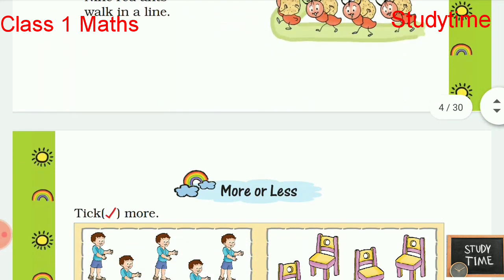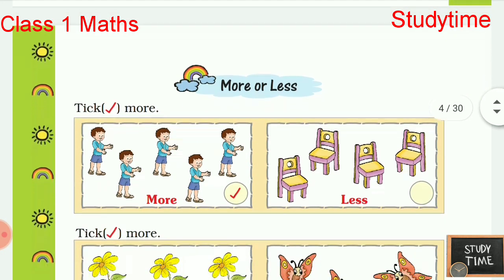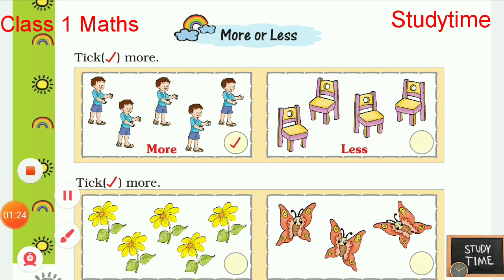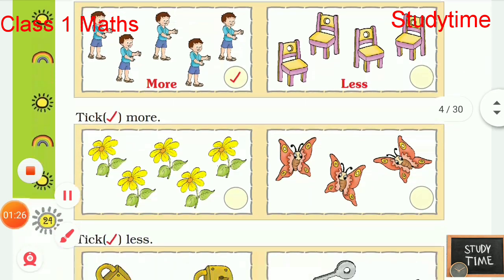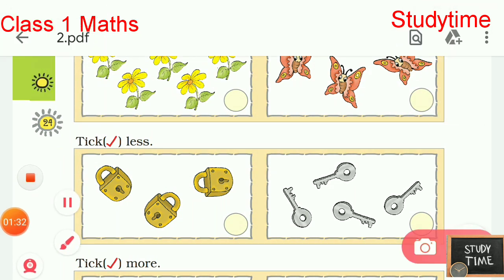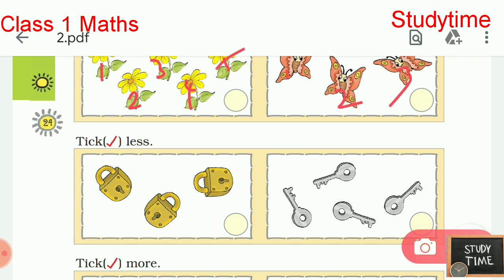Next is more or less. Here we have to tick which is more. An example has been given. We shall do the next one. First you have to count: one two three four five, one two three. So which is more? Five is more.